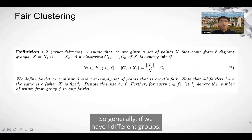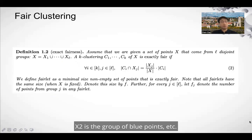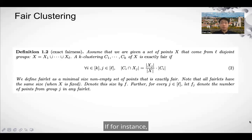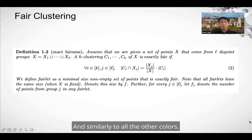Generally, if we have L different groups — where the groups can be seen as groups of colors; for instance, X1 is the group of red points, X2 is the group of blue points, etc. — then a clustering is exactly fair if the proportion of red points in each cluster equals the proportion of red points in the population, and similarly for all the other colors.